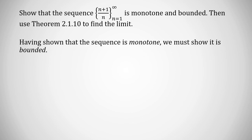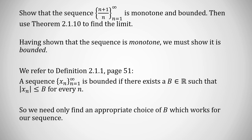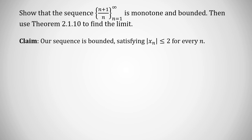We've shown the sequence is monotone decreasing, which means it is monotone. As directed, the next thing to show is that it is bounded. From Definition 2.1.1 on page 51, a sequence is bounded if there is a real number b such that the absolute value of every term is less than or equal to b. We claim that |x_n| ≤ 2 for all n.